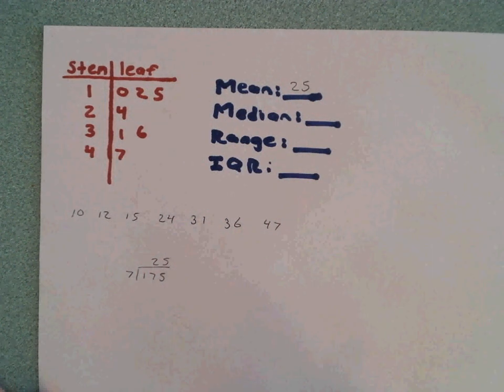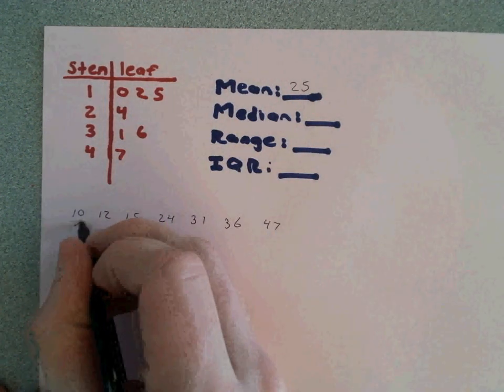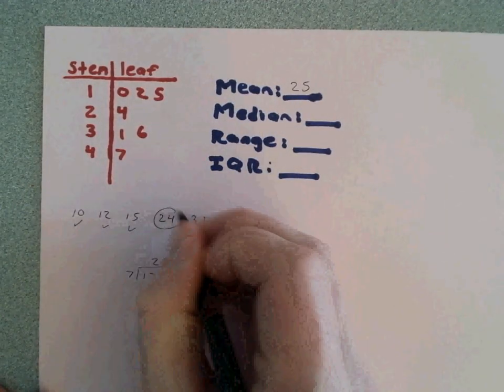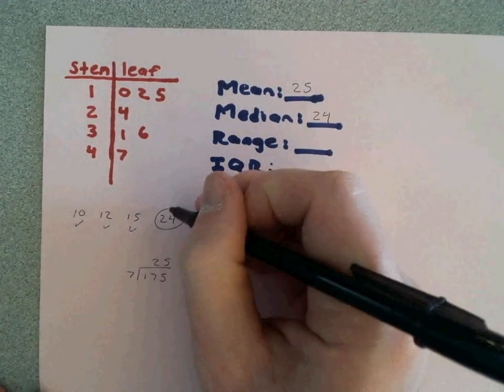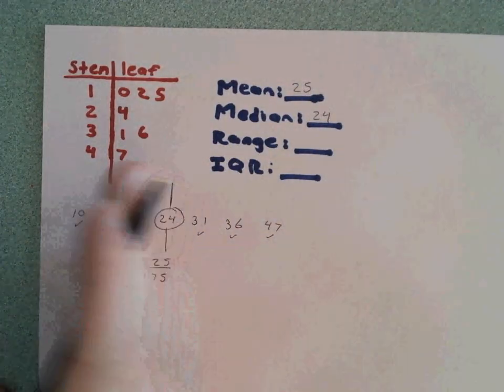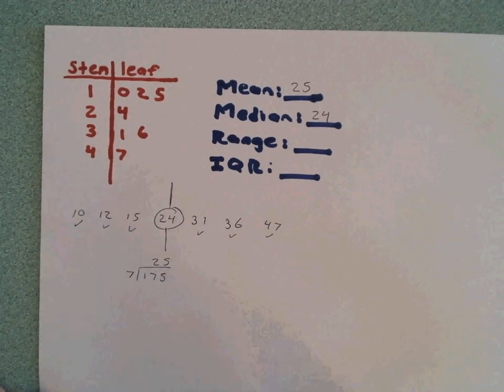To find the median, we want to find the number that is exactly in the center. So we're going to cross off the least and the greatest values until we reach the middle, which leaves us with 24 right in the middle. 24 is our median. If I drew a line straight up and down, I would have three data values on the left and three data values on the right, which means I found the center.